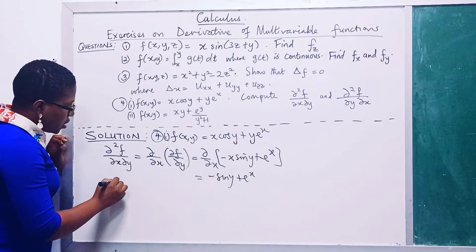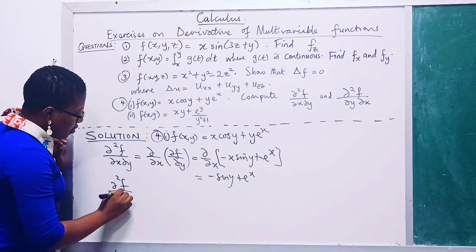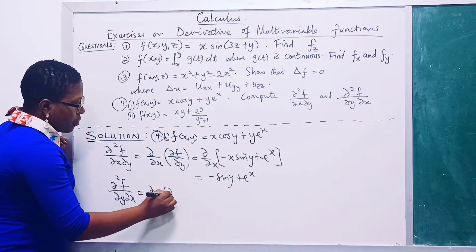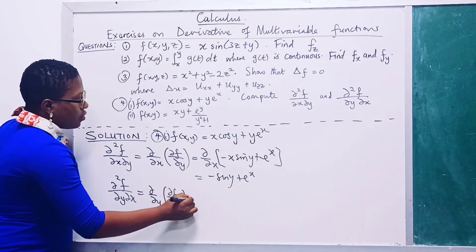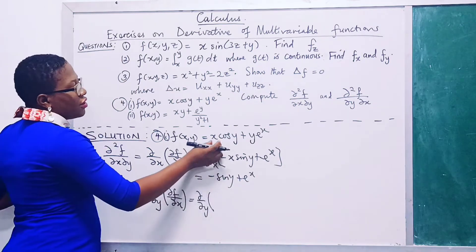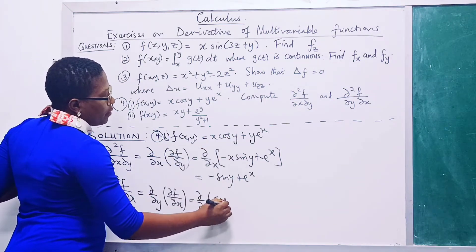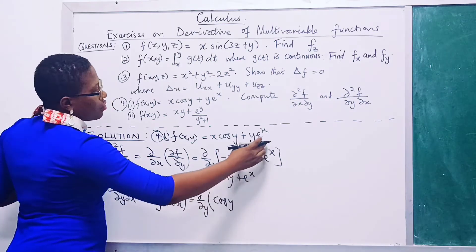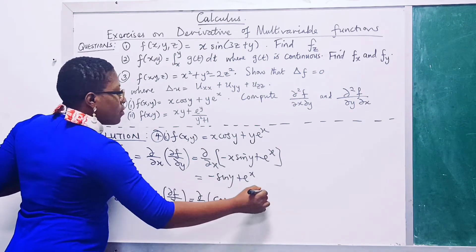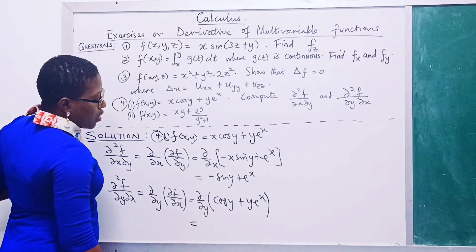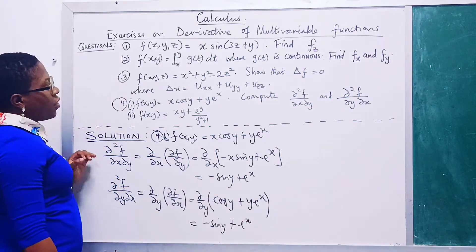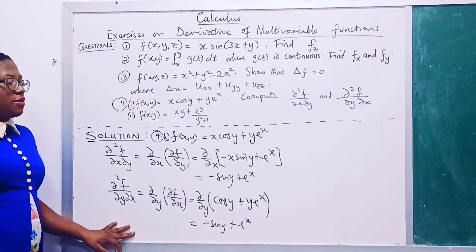Now for the second mixed partial: partial squared f over partial y partial x. This equals partial/partial y of (partial f/partial x). Differentiating f with respect to x gives cos(y) + y·eˣ. Then differentiating with respect to y gives minus sin(y) plus eˣ. We observe that both mixed partials are equal.